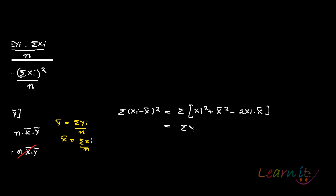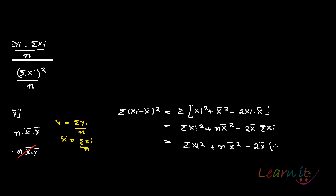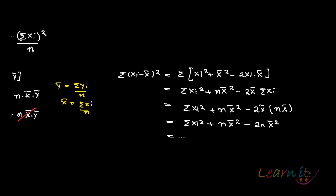Put the summation sign. Summation of xi squared; since x bar is constant, x bar squared is also constant, giving n·x bar squared; minus 2·x bar, which is constant, comes out of the summation sign into summation of xi. Now, summation of xi equals n·x bar, so you can write: summation of xi squared plus n·x bar squared minus 2·n·x bar squared, which simplifies to summation of xi squared minus n·x bar squared.